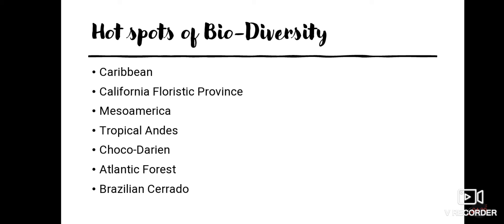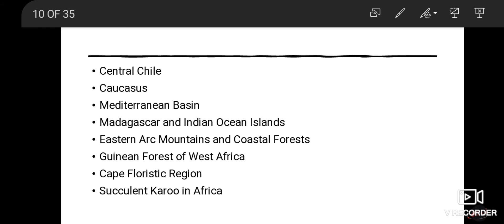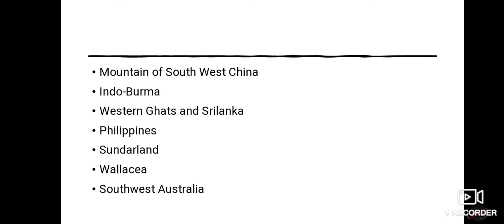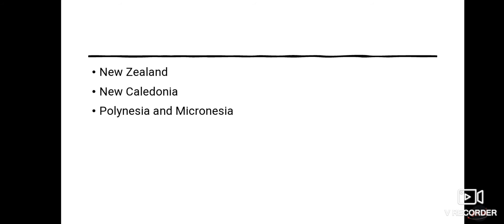The major hotspots of biodiversity include: Caribbean, California Floristic Province, Mesoamerica, Tropical Andes, Choco-Darién, Atlantic Forest, Brazilian Cerrado, Central Chile, Caucasus, Mediterranean Biodiversity, Madagascar and Indian Ocean Islands, Eastern Arc Mountains and Coastal Forests, Guinean Forest of Western Africa, Cape Floristic Region, Succulent Karoo, Mountains of Southwest China, Indo-Burma, Western Ghats and Sri Lanka, Philippines, Sundaland, Wallacea, Southwest Australia, New Zealand, New Caledonia, and Polynesia and Micronesia.